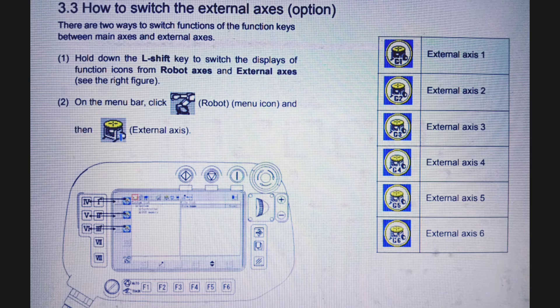G1 means external axis 1, G2 means external axis 2, G3 means external axis 3, G4 means external axis 4, G5 means external axis 5, G6 means external axis 6. Friends, here we discussed in detail many important points.